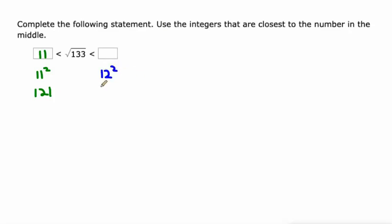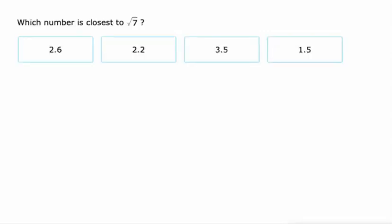All right, if I go up from there to 12 squared, that's 144, which is bigger than 133. Okay, so a little bit less than 133 would be 11 squared, and a little bit bigger than 133 would be 12 squared. So between 11 and 12. And that's the concept that we're using throughout here.